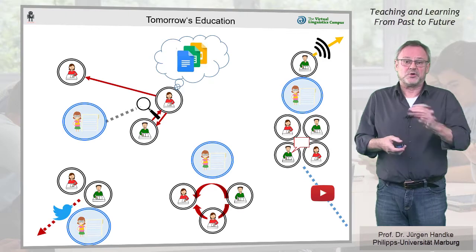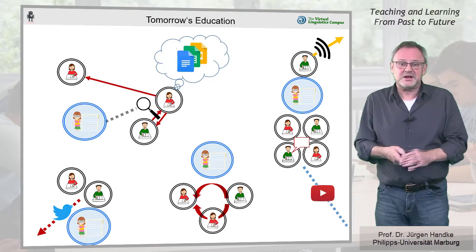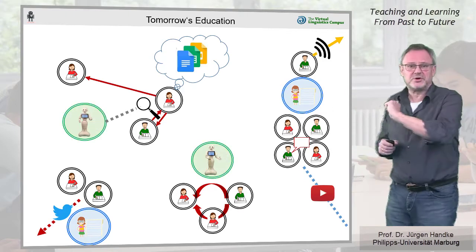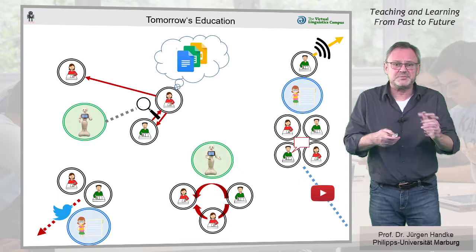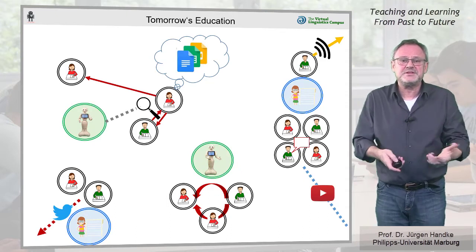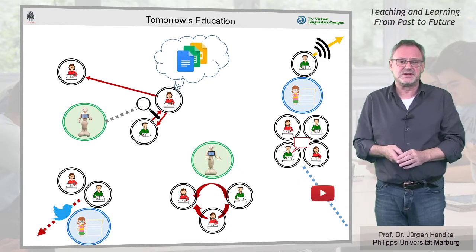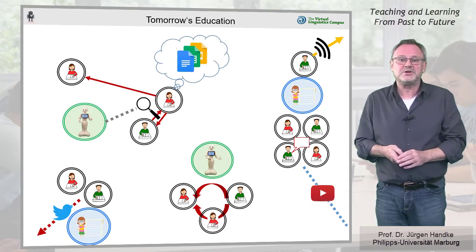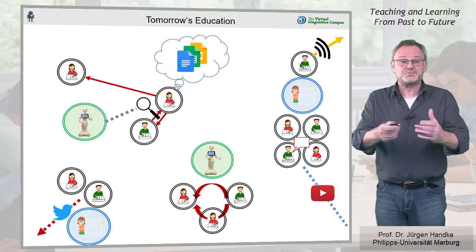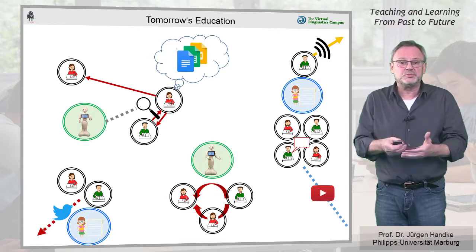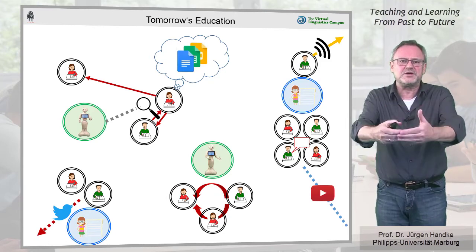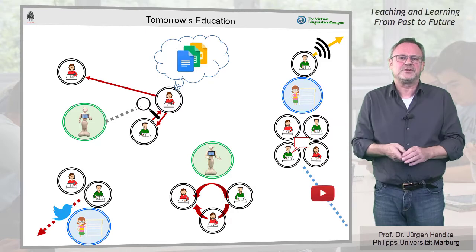And already they have support. Humanoid robots have begun to free them from those tasks that require a high degree of automation, thus providing the human guides with even more time for their learners.